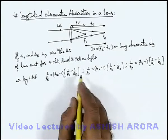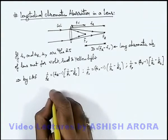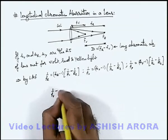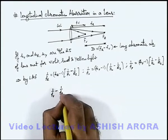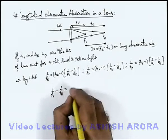Now in this situation if we take the difference of these focal lengths, 1 by focal length of violet minus 1 by focal length of red, then we can see we are getting this: